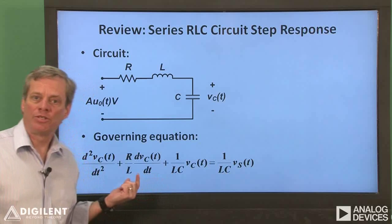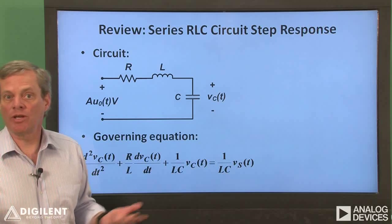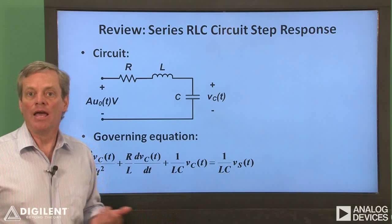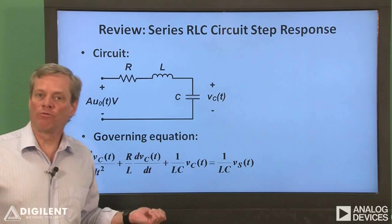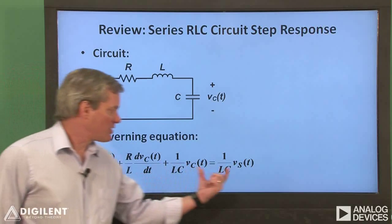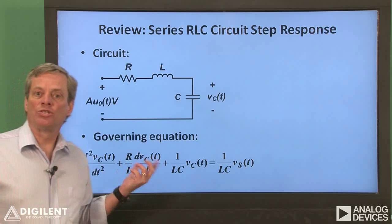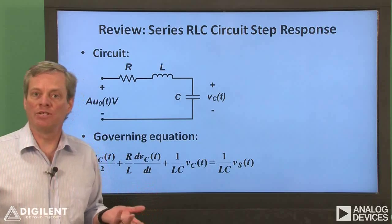This is the governing differential equation for the circuit. It's been derived in the textbook and in the lecture videos, so we won't dwell on how we got it for now. If we compare this to the standard form we use for second-order differential equations, this term is the square of the natural frequency, and this term is 2 times the damping ratio times the natural frequency.